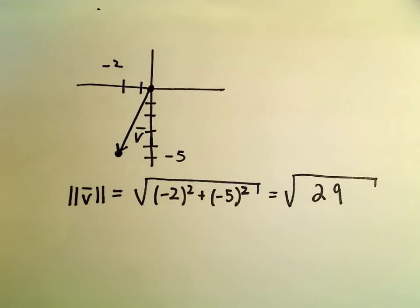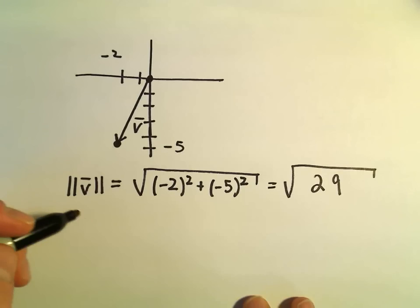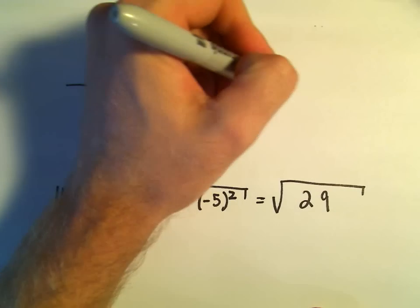You can't factor 29 except to use 1 and 29 if we're using whole numbers. It's just a prime number. The square root of 29, I would leave that alone and say that's my magnitude. Now to find this direction angle.